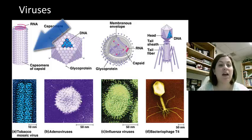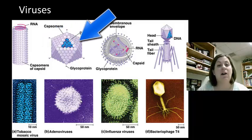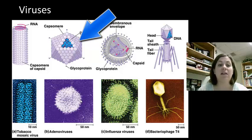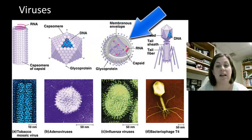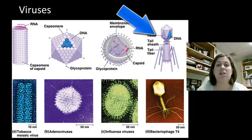Over here we have the tobacco mosaic virus, and you'll see that it's a rod-shaped virus. The adenovirus, which is what causes the common cold, this is what we would consider an isohedral shape. You'll notice that the tobacco mosaic virus has RNA, whereas the adenovirus has DNA. Influenza virus is what causes the flu, and you'll see here that it also has an envelope, as well as being RNA. The last one is a bacteriophage. Bacteriophages only infect bacteria, and you can see how its structure is very different.